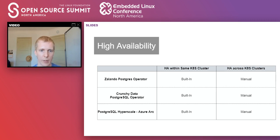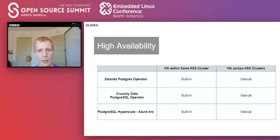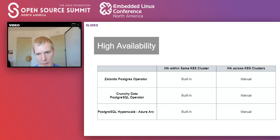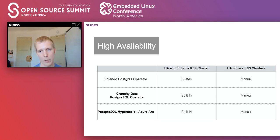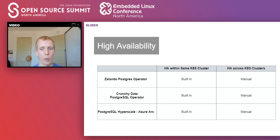Comparing operators: the Zalando, Crunchy, and Azure Arc operators all have HA within the same Kubernetes cluster built in — this is something you generally don't need to worry about, with various configuration settings around synchronous replication. I would say you should really use synchronous replication. On the other side, having HA across different Kubernetes clusters is usually left as an exercise to the person setting up the environment. The thing to look for is streamlining this process as much as you can — if you have a region-wide failure, the most important thing is how quickly you can promote a replica to primary. With all of these operators, it is important that you actually exercise this and make sure it works well. Also think about Kubernetes labels, which allow you to differentiate nodes — for example, whether to use pod affinity to co-locate application and database for performance, or pod anti-affinity to place Postgres pods in different zones.